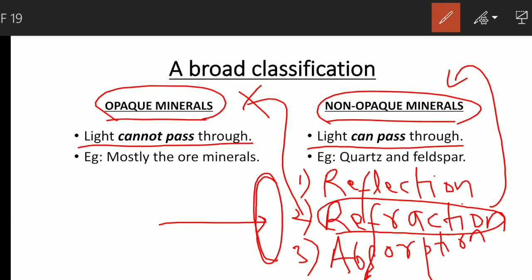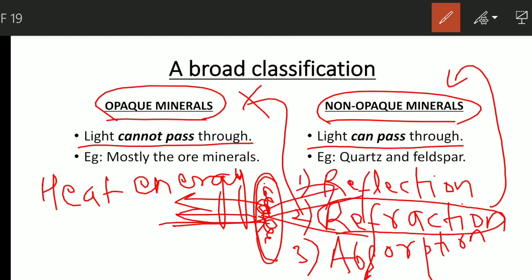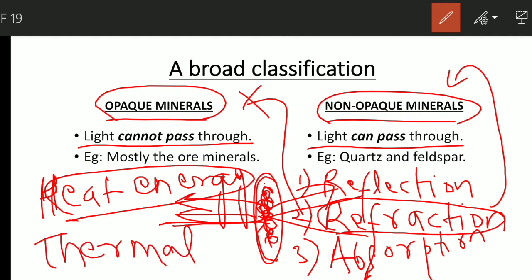If a mineral absorbs the light, this light is converted into heat energy, because the light cannot be lost inside the mineral — energy has to be conserved. In the case of reflection the light is going back. In the case of refraction the light is transmitted through the mineral. But when the light is absorbed, it converts into heat energy or thermal energy, and the substance gets a little bit heated up.